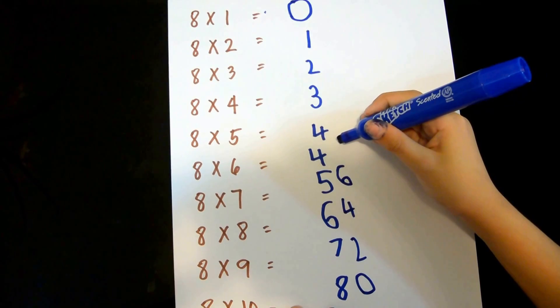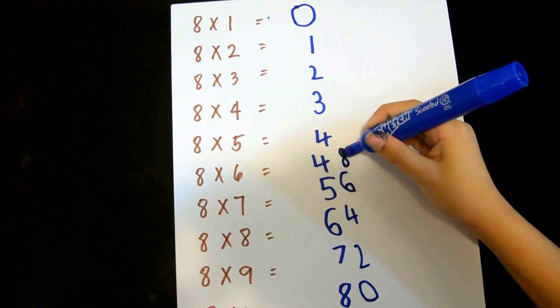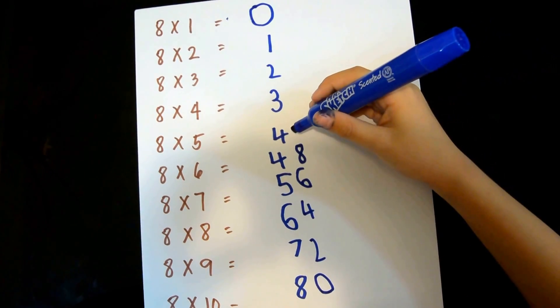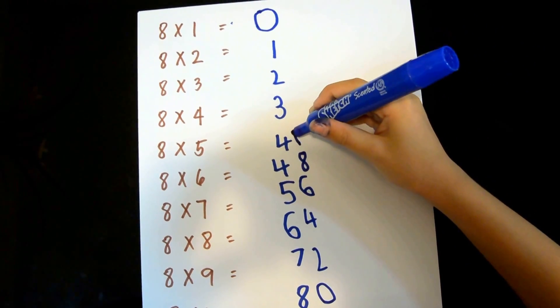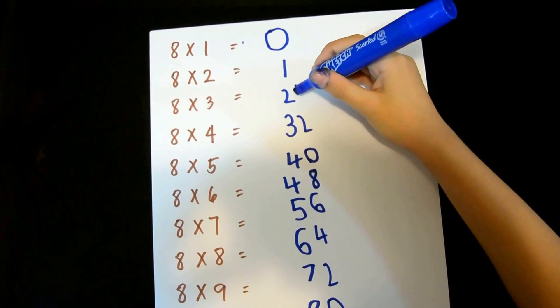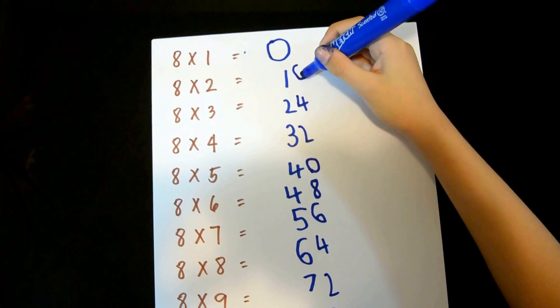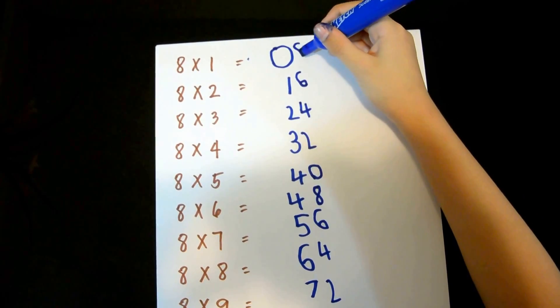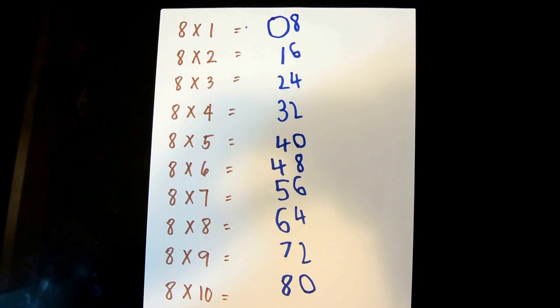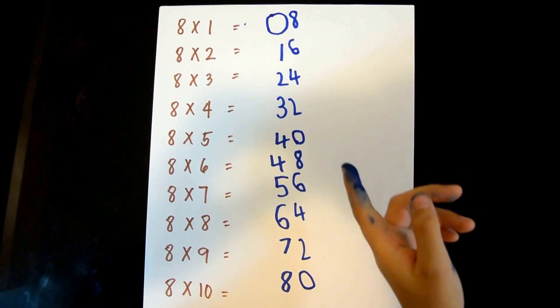eight. Then you'll do it again: zero, two, four, six, eight. Now let's see if our answers are right. 8